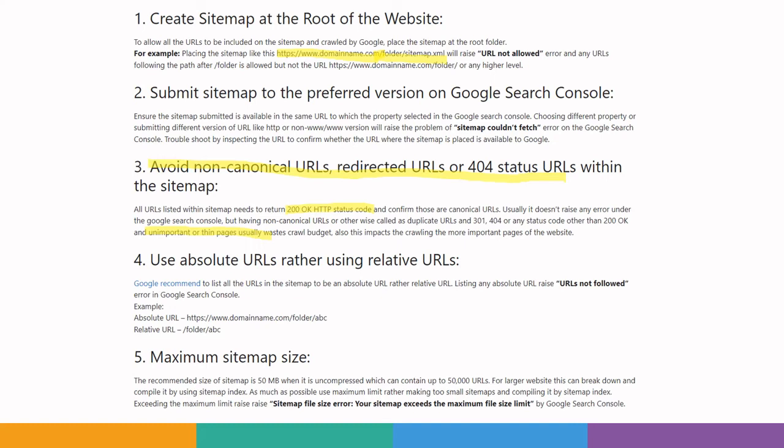Number four — use absolute URLs rather than relative URLs within the sitemap. Google recommends providing the full URL so that it doesn't have difficulty crawling the URLs listed in the sitemap. Follow Google's recommendation to use absolute URLs in the sitemap.